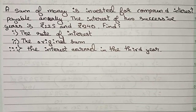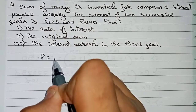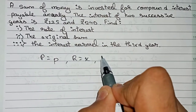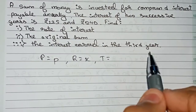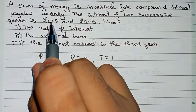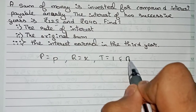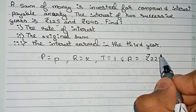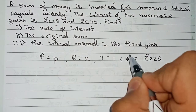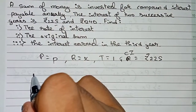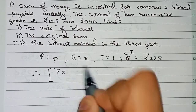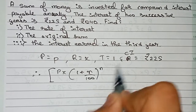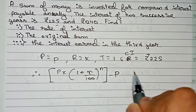In this question, we make two equations. For the first equation, principal P is unknown and rate of interest is also unknown, so we take rate as x and time as 1 year. The CI formula is: principal into (1 + r/100) to the power n, minus principal, equals the CI.